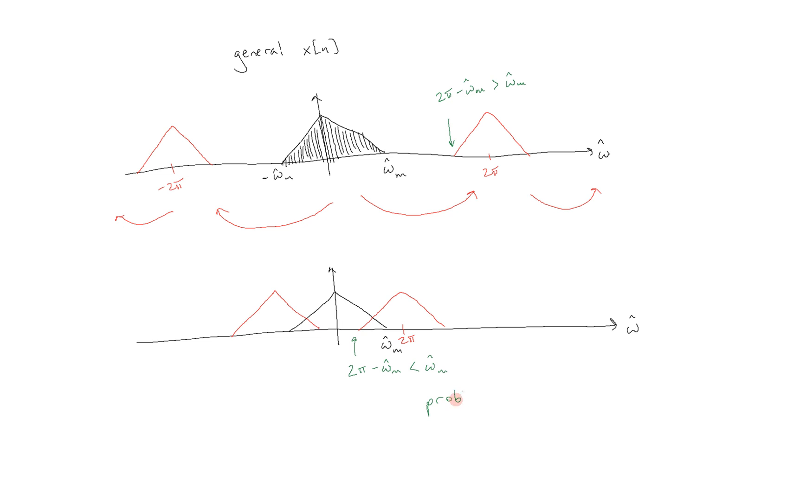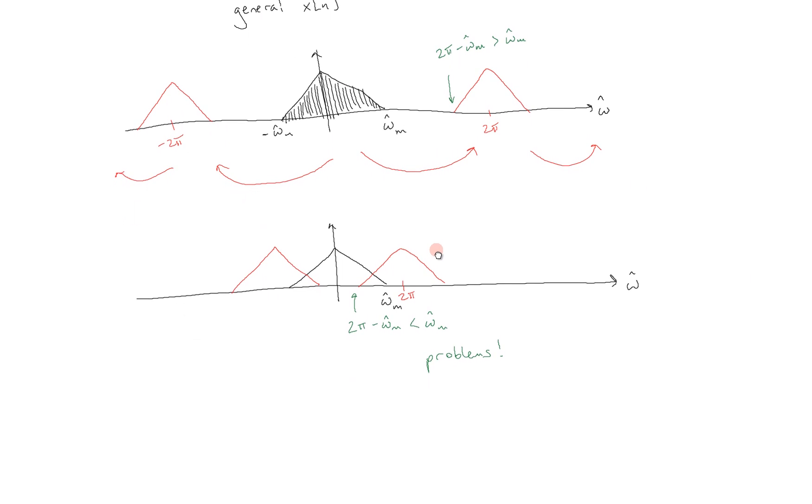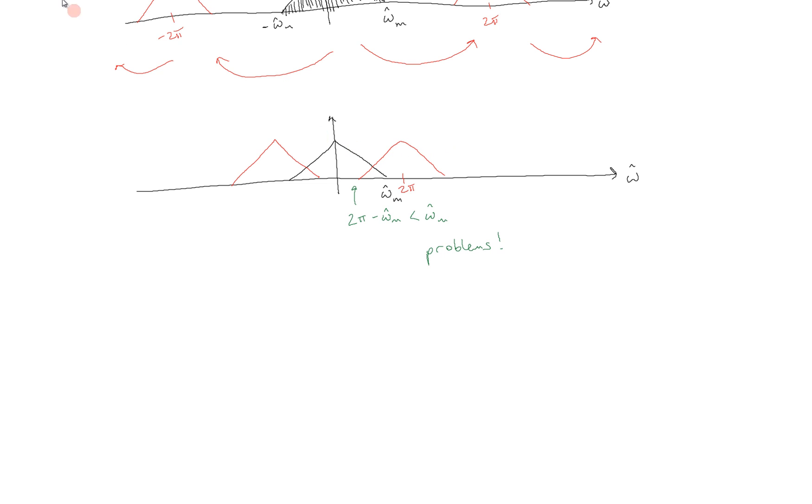But this is much more general. And from here we can actually derive a condition that must be satisfied in order to avoid this kind of a complication. What this shows us is that 2π minus omega hat sub m must be greater than omega hat sub m in order to avoid any problems. In other words, omega hat sub m must be less than π, just rearranging this equation right here.